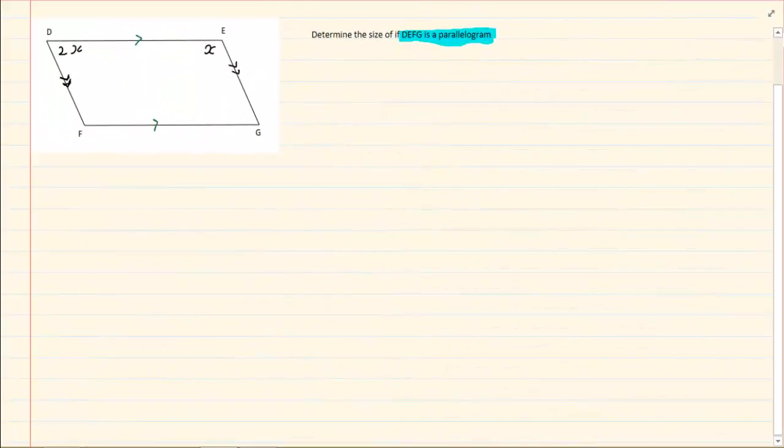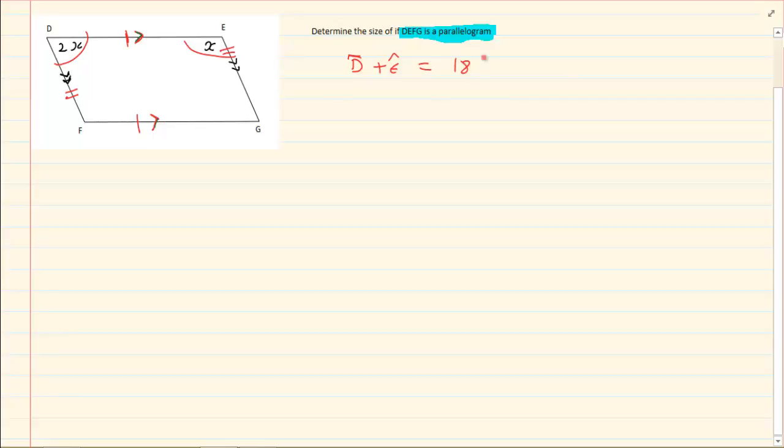So as soon as they tell me it's a parallelogram, that means you can put in that it's parallel, you can put in that it's equal, any information that you know you can put it in. Now since it is parallel, what can you tell me about D plus E? D plus E is going to equal to 180 degrees. Why?